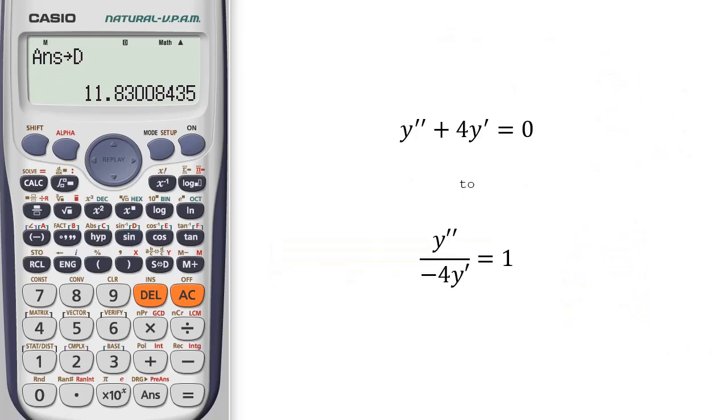Now let's evaluate the given higher order differential equation. We get y double prime over negative 4y prime equals to 1. Using the values stored, D over negative 4m.